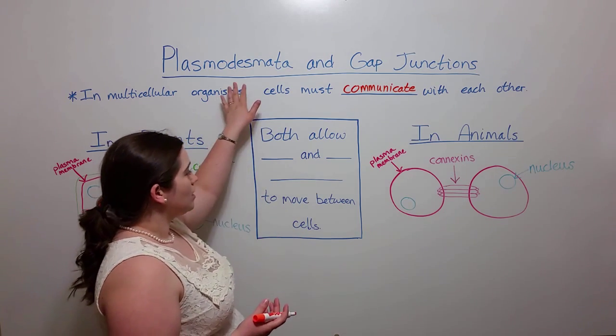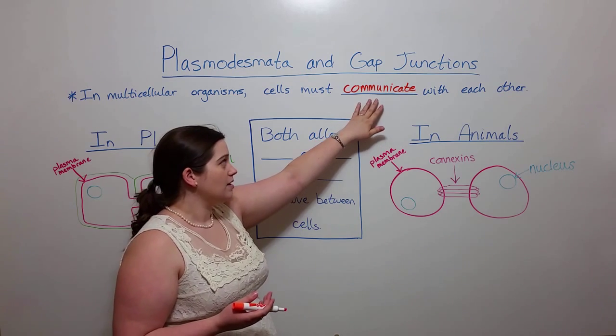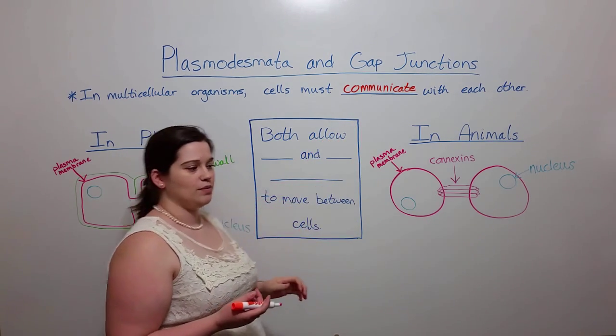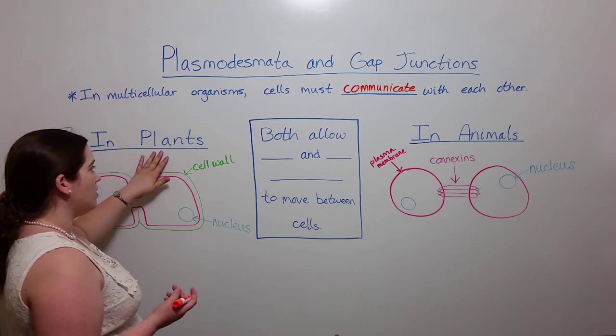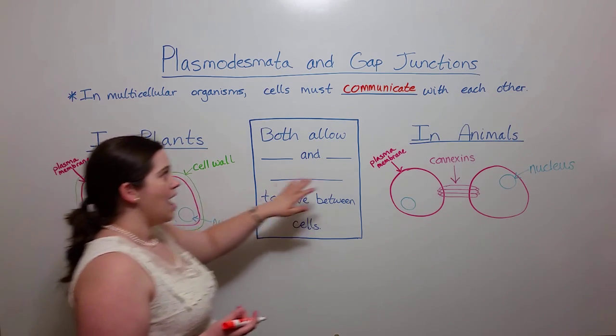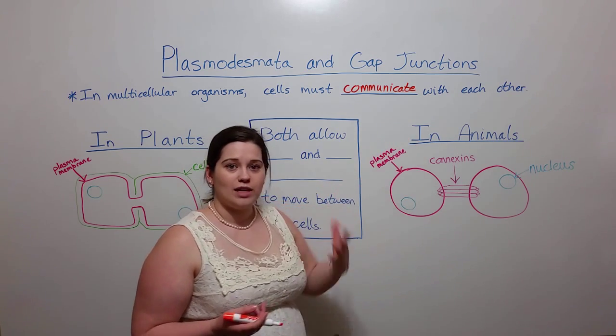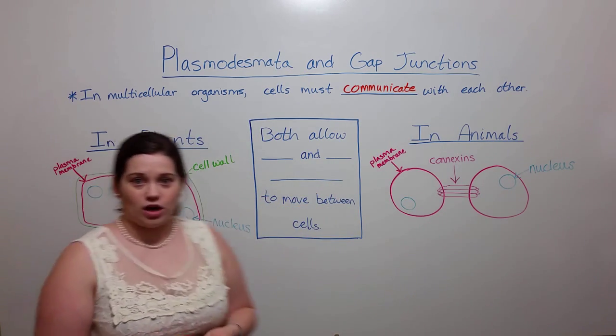So plasmodesmata and gap junctions both facilitate cell-to-cell communication just in different types of organisms. Plasmodesmata are in plant cells and gap junctions are in animal cells. So let's look at these different structures.